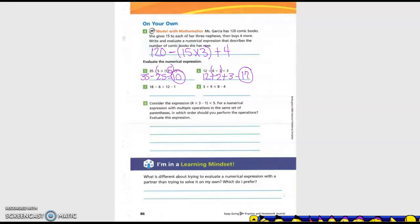Next one. 18 divided by 6 plus 12 minus 1. So what am I going to do first? So I'm going to go ahead and put it first. So I'm telling myself that's what I do first. 18 divided by 6 is 3 plus 12 minus 1. So what is 12 plus 3? So what is 12 plus 3, or 15 minus 1 is 14.